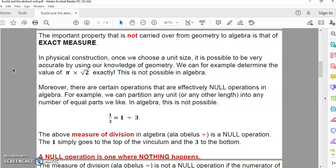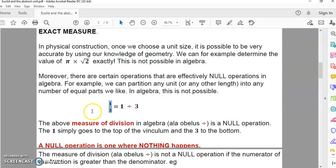Let's look at an example of a null operation in algebra. The number one third is supposedly derived from the operation 1 divided by 3, but this is a null operation because the obelisk, which is this symbol, means a certain process. In this particular case, because one is less than three, all that happens is that the one goes to the top of the vinculum - this horizontal line - and the three to the bottom. That means one third, so nothing actually happens in algebra.